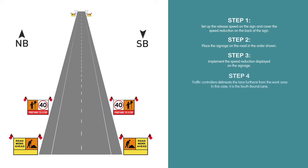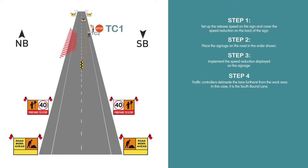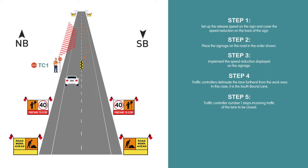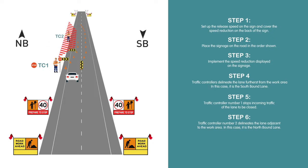Step 4: Traffic controllers delineate the lane furthest from the work area — in this case, it's the southbound lane. Step 5: Traffic controller number 1 stops incoming traffic of the lane to be closed. Step 6: Traffic controller number 2 delineates the lane adjacent to the work area — in this case, it's the northbound lane.